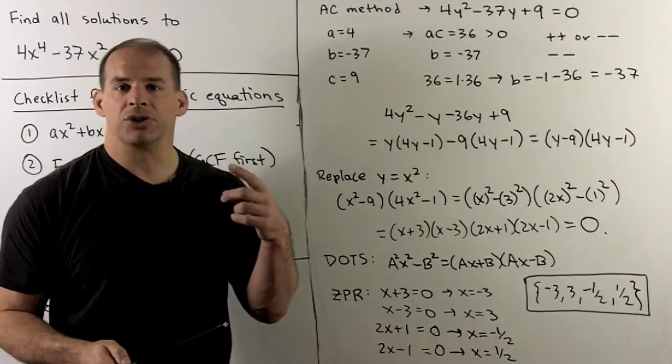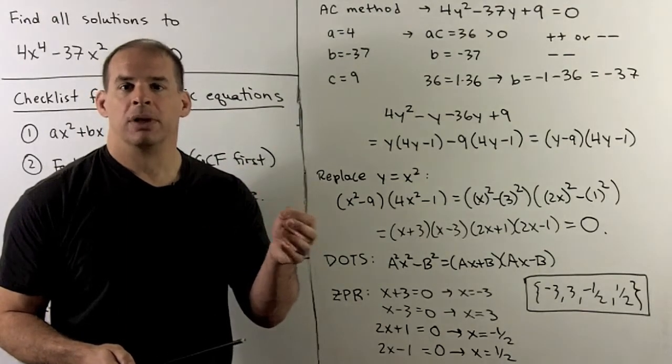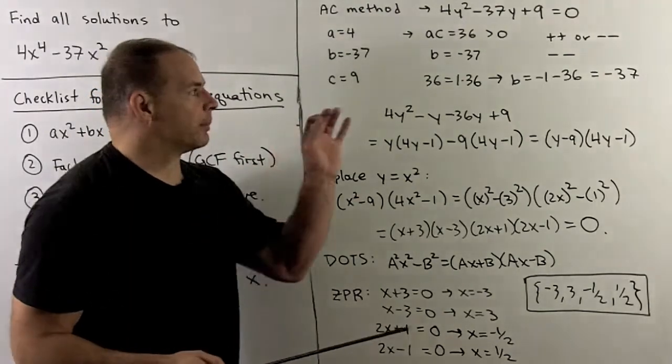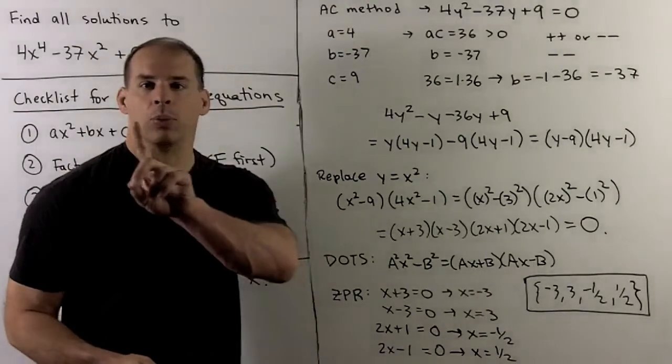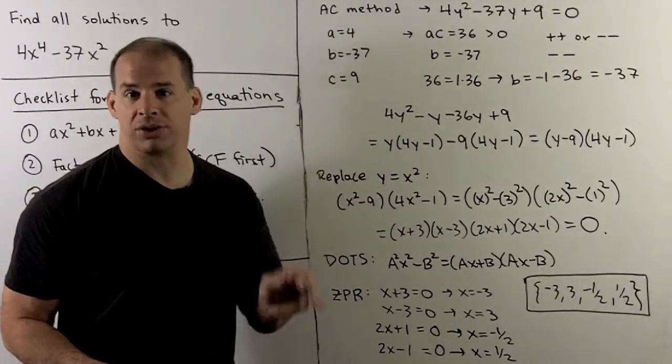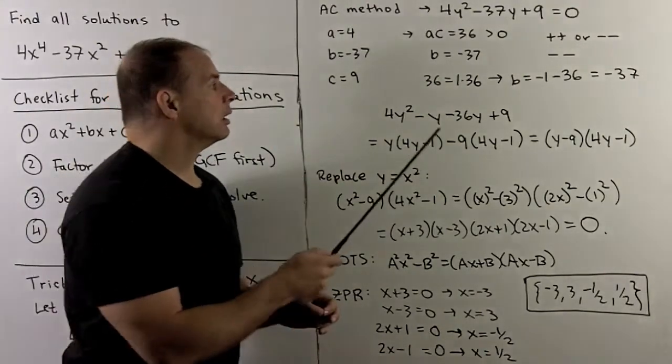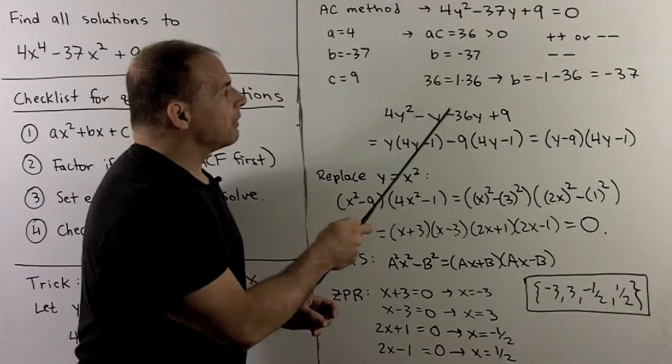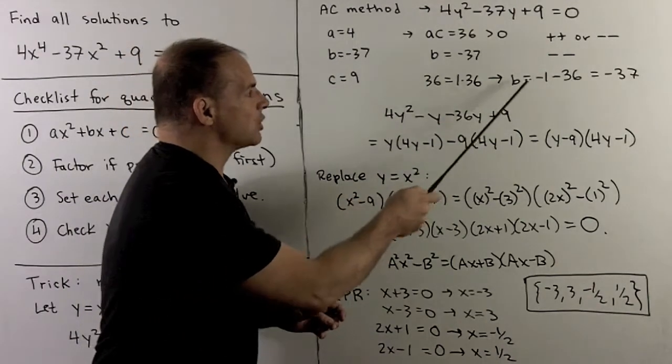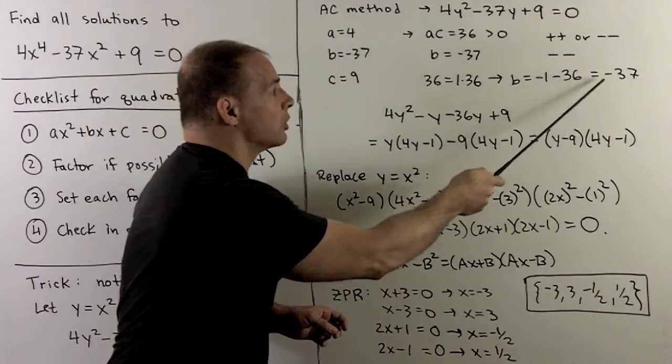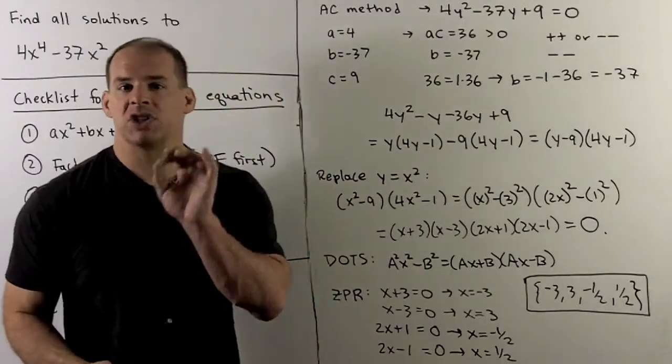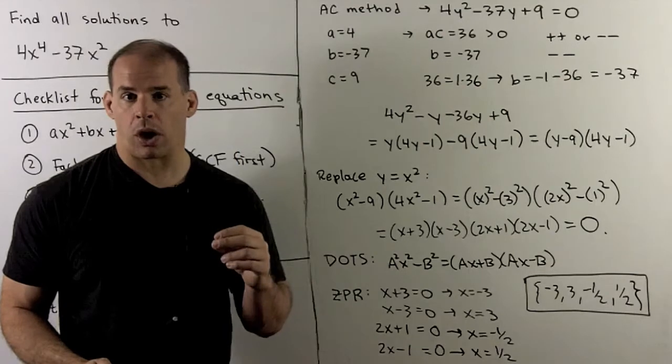Now, we go through all factors of AC, or 36, and try to find the one where if we put the minus signs in, minus minus goes to minus 37. We hit our answer right off the bat. If I take 1 times 36, I have minus 1, minus 36, goes to minus 37. So, that tells us how to split b to get our grouping to work.